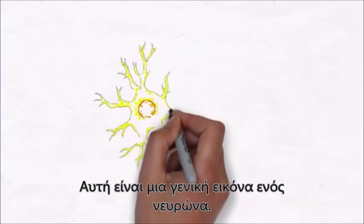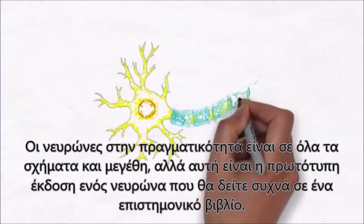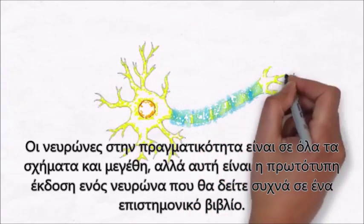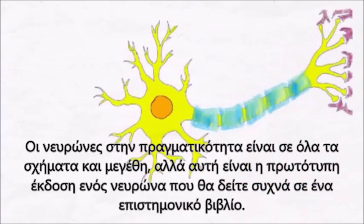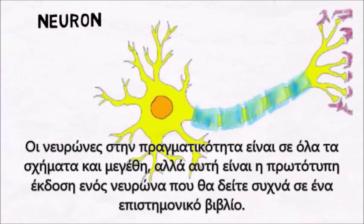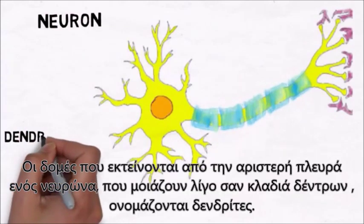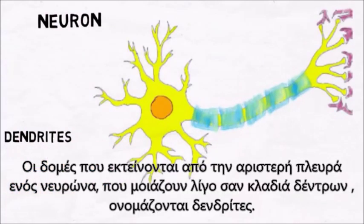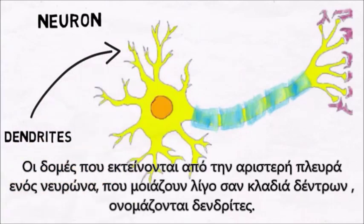This is a generic image of a neuron. Neurons actually come in all shapes and sizes, but this is the prototypical version of a neuron that you'll often see in a textbook. The structures extending from the left side of the neuron that look a little bit like tree branches are called dendrites.